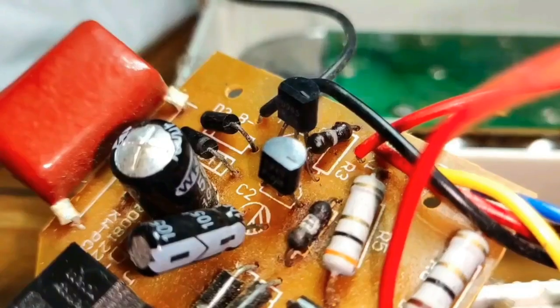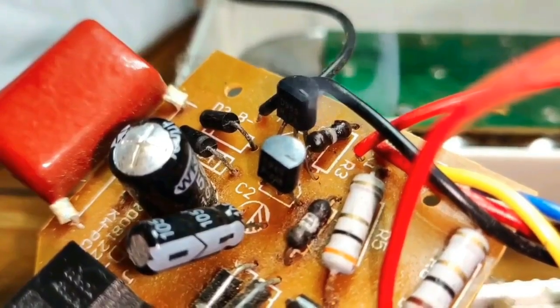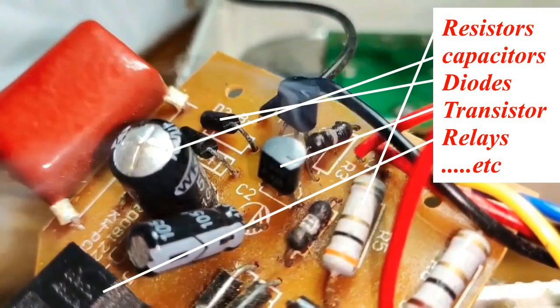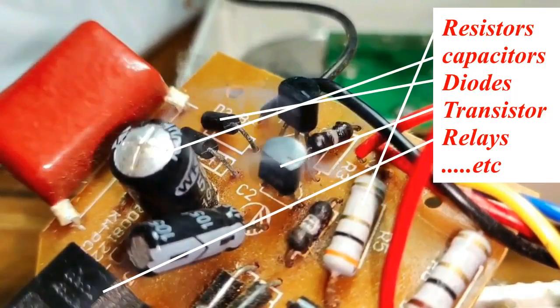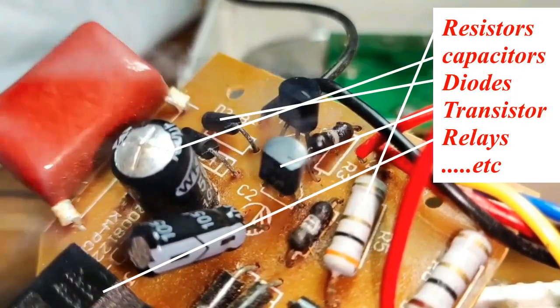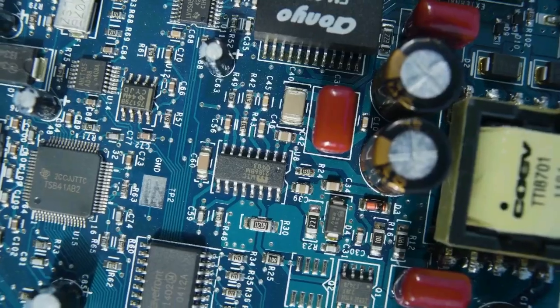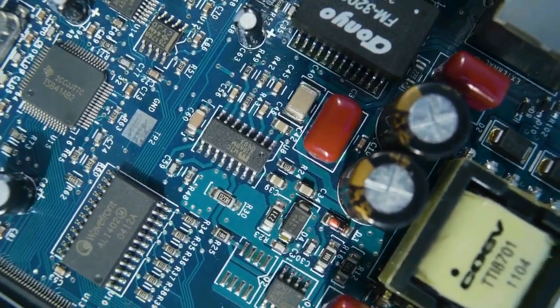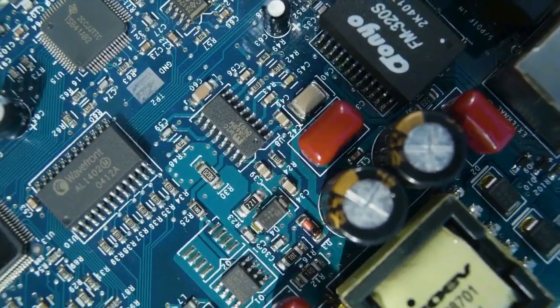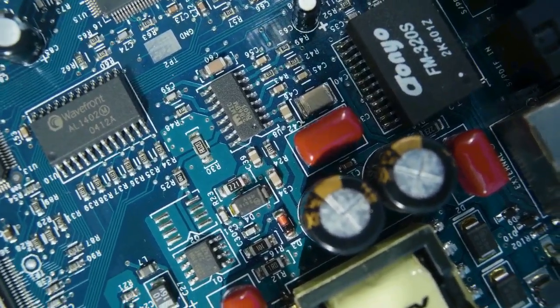Have you ever opened an electronic device and wondered what all those tiny components do? From resistors to transistors, each part plays a critical role in making circuits work. In today's video, I will explain the 15 most common electronic components and their functions in a simple and beginner-friendly way.